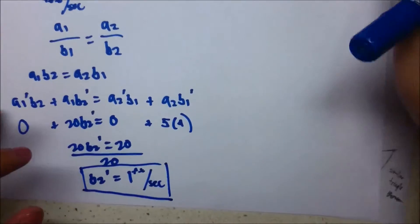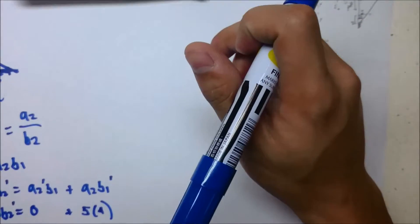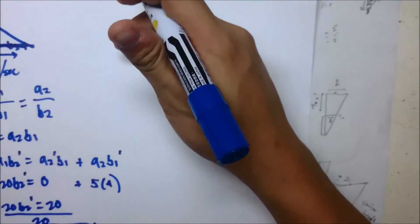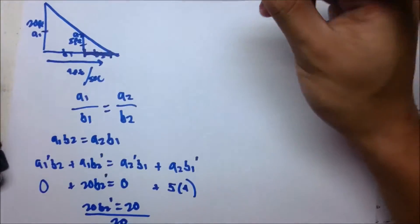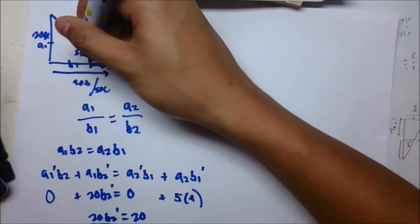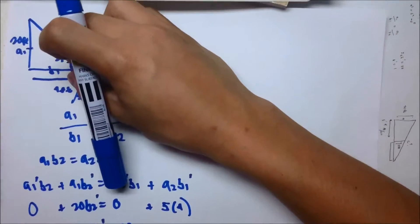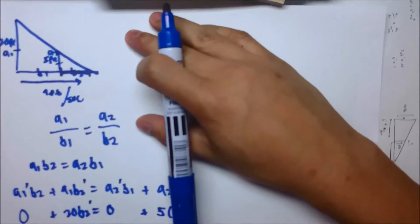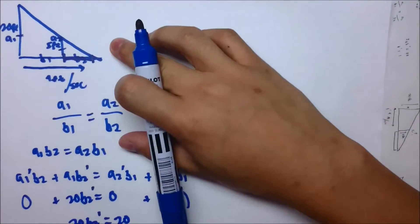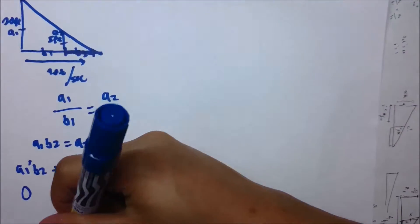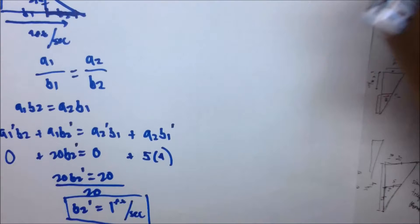There's an even easier way to do this: since the triangles are similar and completely proportionate, 5 feet is one-fourth of 20 feet, so you can just take one-fourth of 4 feet per second to get the same answer of 1 foot per second.